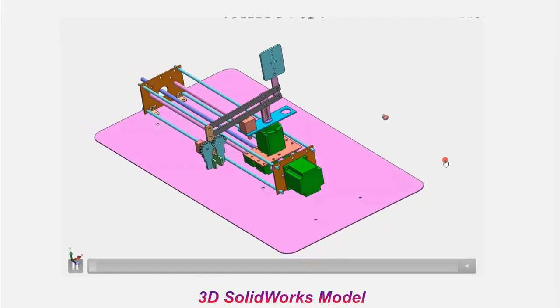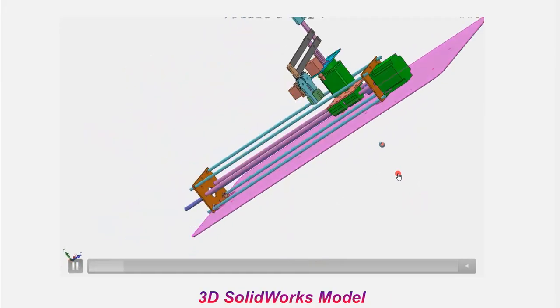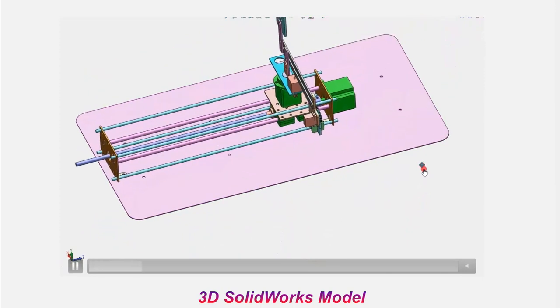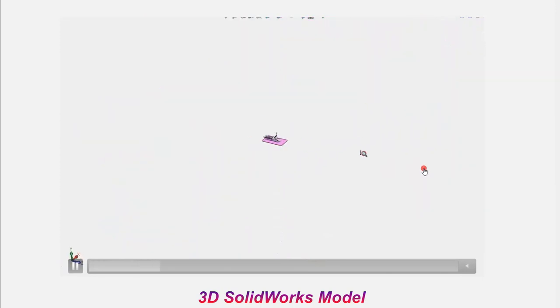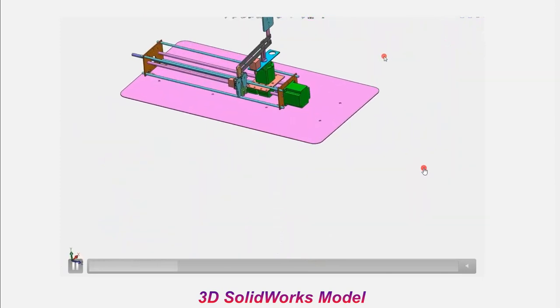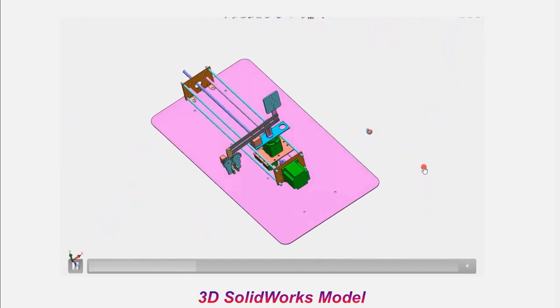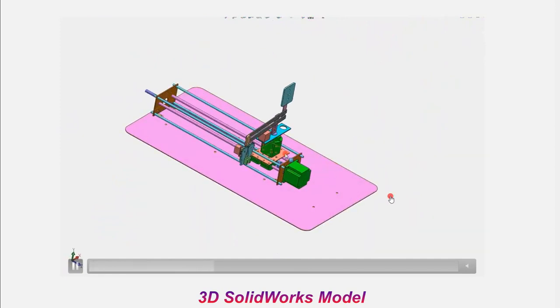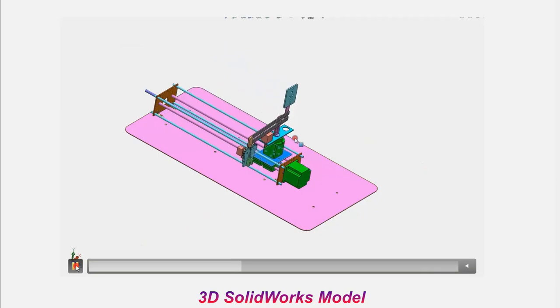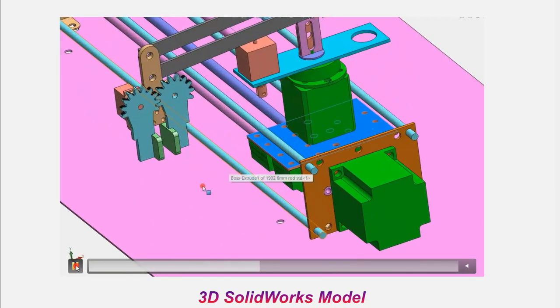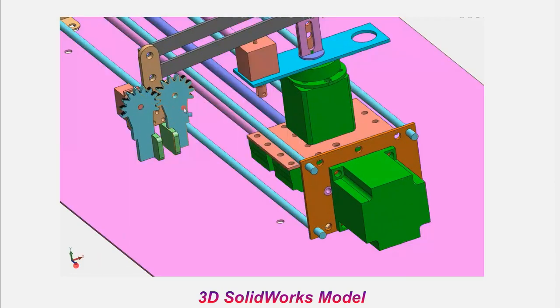Now let's see the CAD model actually. So this is the CAD model. As usual, we made the CAD model in SOLIDWORKS. All the parts and assembly after making it, we will assemble and we just analyze it. Once it is successful and convincing, then only we go in for making the component actually.